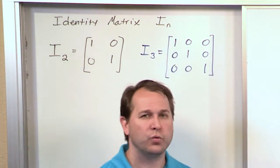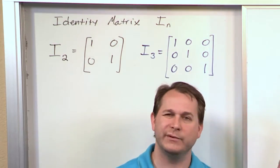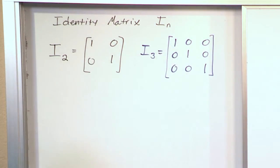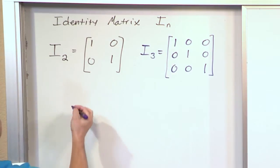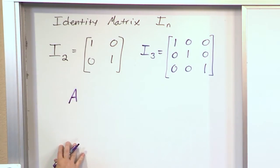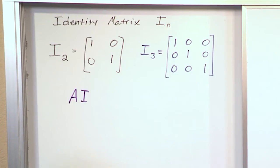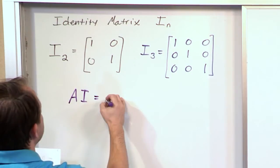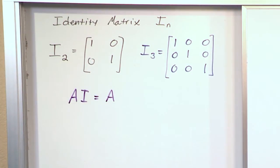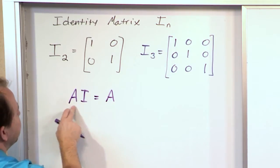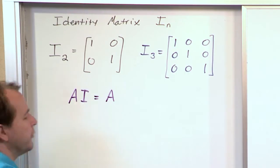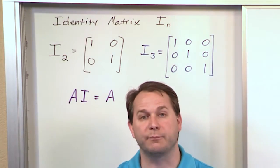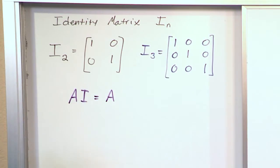So if you ever see I sub N in a proof or theorem in your linear algebra book, just replace it with the concept of an identity matrix with ones on the diagonal. Now why do we care about that? Because an identity matrix is special for the following reason: if you take any matrix A and multiply it by the identity matrix of the proper size — the same size as A — you're going to get the same matrix back. Matrix multiplication isn't always defined, so you need to make sure your identity matrix is of the proper size to actually do the multiplication.